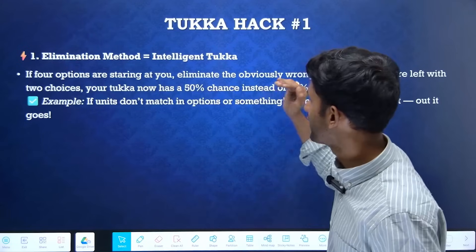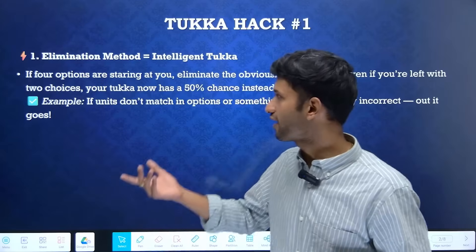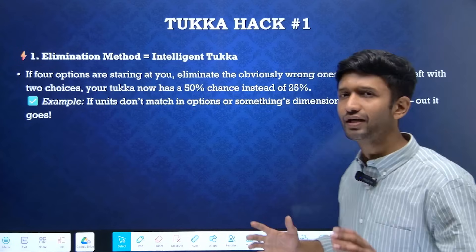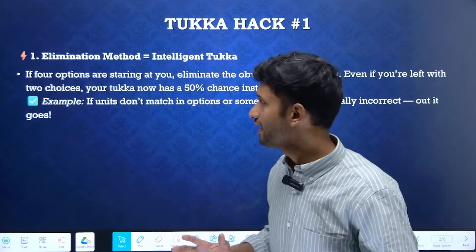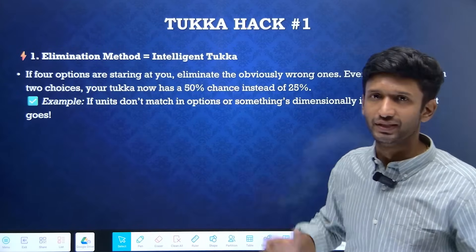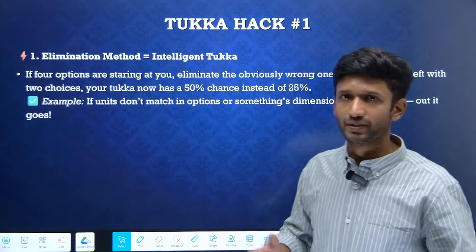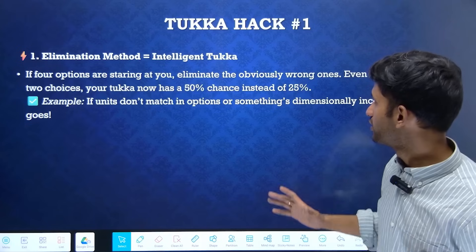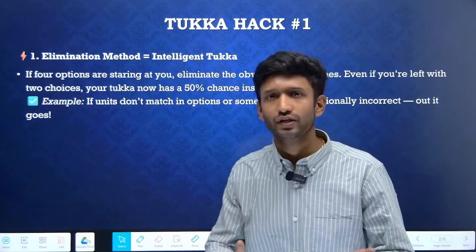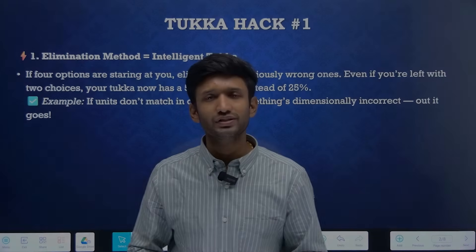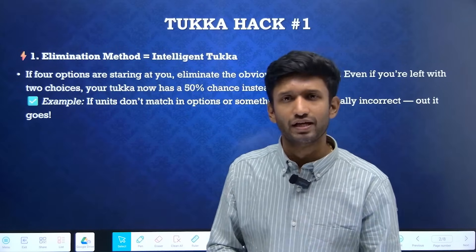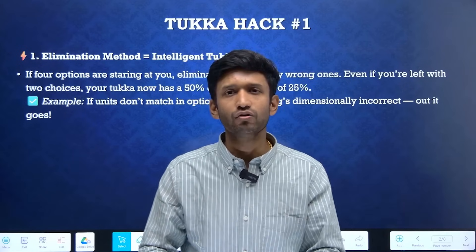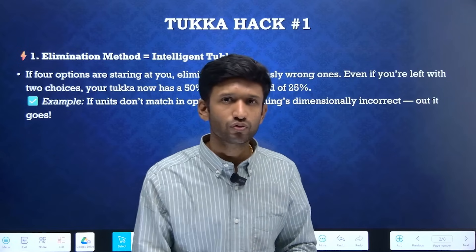The first tukka hack is the elimination method — intelligent tukka. If there are four options, eliminate the obviously wrong answers, because they are highly unlikely to be correct. Even if you are left with two choices, your tukka probability rises to 50%, up from the initial 25%. For example, if units don't match in the options, or something is dimensionally incorrect, simply eliminate it. You can also substitute options into the mathematical expression in the question to eliminate them and zero in on the final answer.